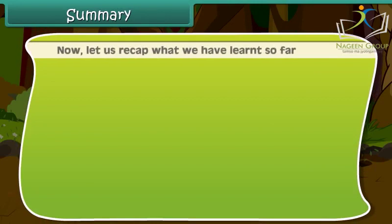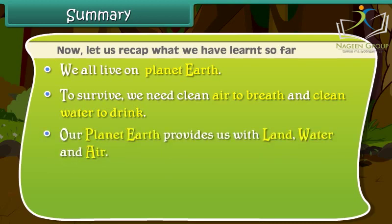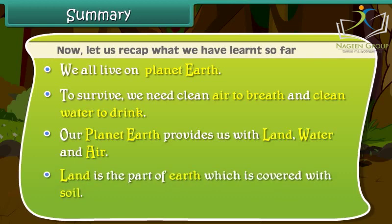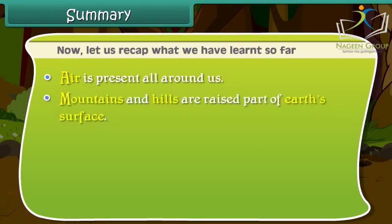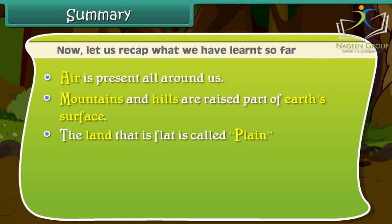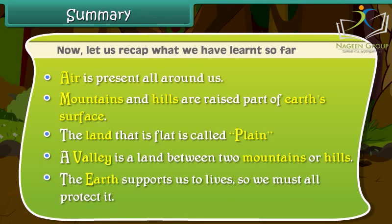Now let us recap what we have learned so far. We all live on planet Earth. To survive, we need clean air to breathe and clean water to drink. Our planet Earth provides us with land, water and air. Land is the part of Earth which is covered with soil. Air is present all around us. Mountains and hills are raised parts of Earth's surface. The land that is flat is called plain. A valley is a land between two mountains or hills. The Earth supports us to live, so we must all protect it.